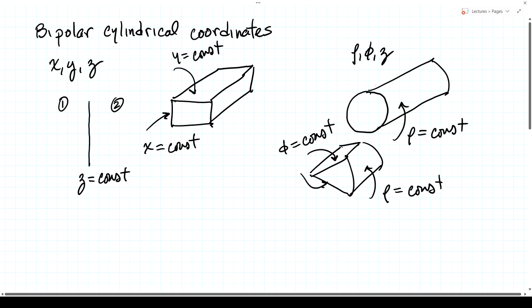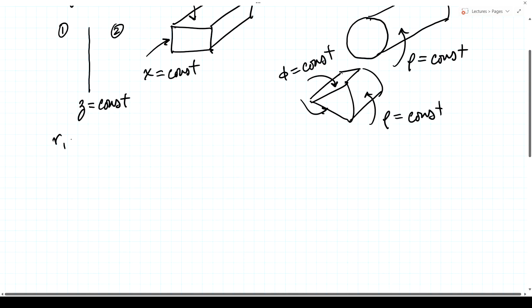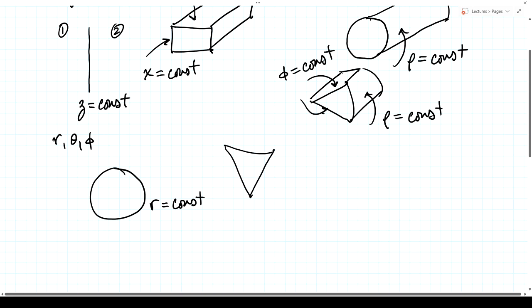We will also later look at spherical coordinates — r, theta, and phi — which are well suited to problems where a surface is described by the radius r equal to a constant, or where the polar angle theta equals a constant, describing cones. So cones and spheres are well suited to spherical coordinates.